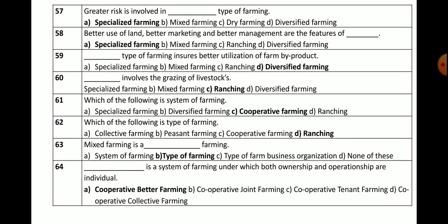Question number 58: Better use of land, better marketing, and better management are features of which farming? Options: specialized, mixed, ranching, or diversified. The correct answer is specialized farming — better use of land, better marketing, and better management are features of specialized farming.